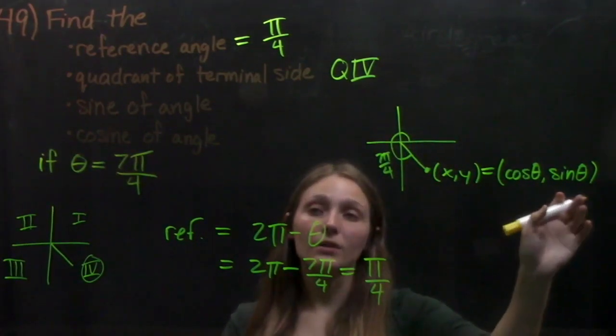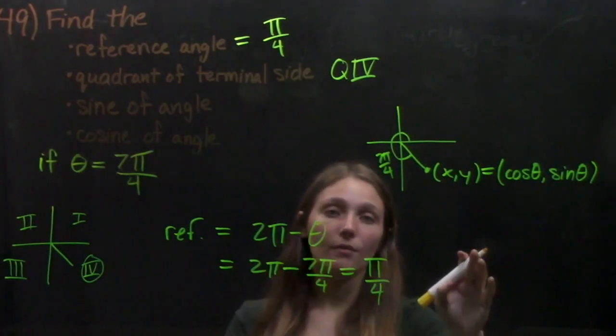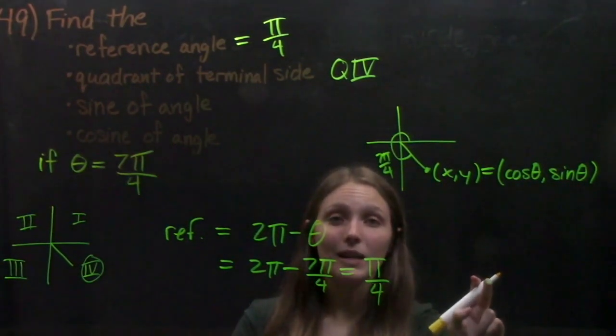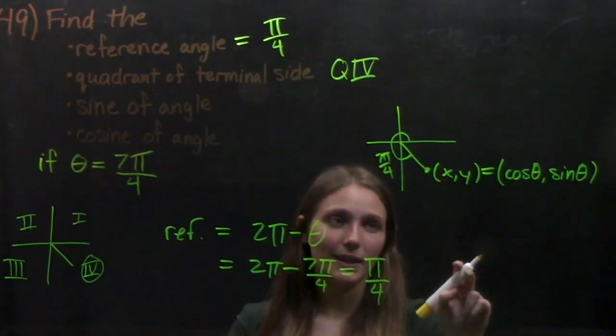And then we'll have our cosine and our sine theta. If you don't already have the unit circle memorized, you will soon. There's also a picture of it on page 468 of your books.